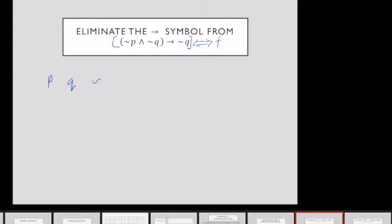So I've got P, Q, not P, not Q, not P and not Q, and then finally not P and not Q implies not Q. How's that? Okay.